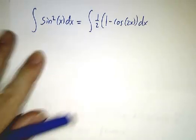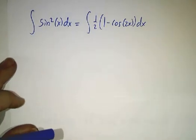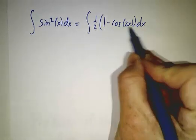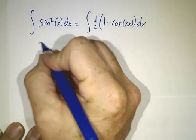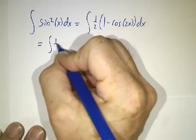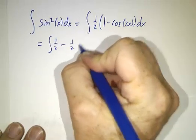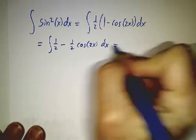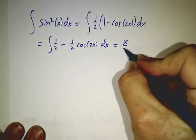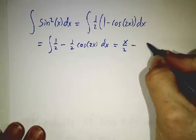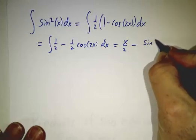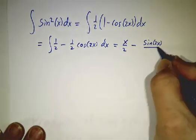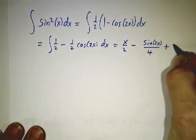So here's an example. You want to find the integral of sin squared of x. Well you just rewrite sin squared as 1 half of 1 minus cos 2x. So this is integral of 1 half minus 1 half of cos of 2x dx. The integral of 1 half is just x over 2. And the integral of cos of 2x is sin of 2x divided by 2. We've got a half of that, so it's divided by 4. And we're done.